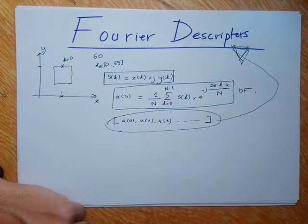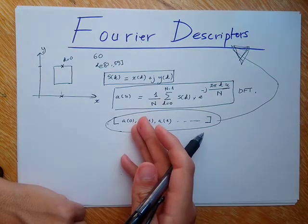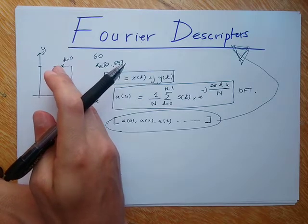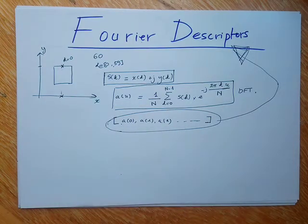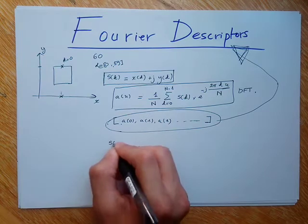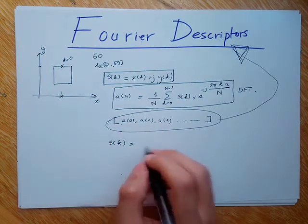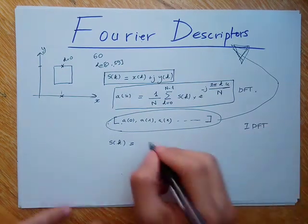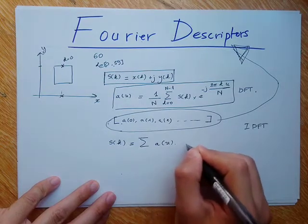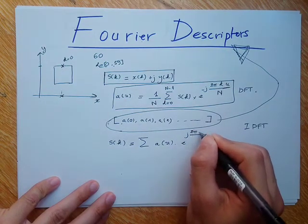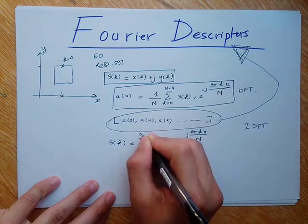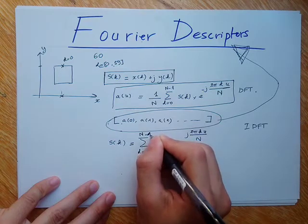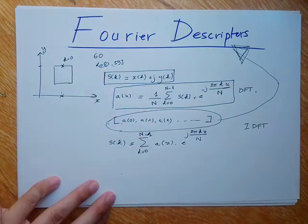It's as simple as that. I can use the Fourier coefficients to represent or describe my boundary. I can also rebuild my original shape using these coefficients by applying the inverse discrete Fourier transform — the summation of all the Fourier coefficients multiplied by exponential of j·2π·k·u divided by n, where k starts from 0 to n minus 1. If I do that, I can get all the edge points of my shape and rebuild it.